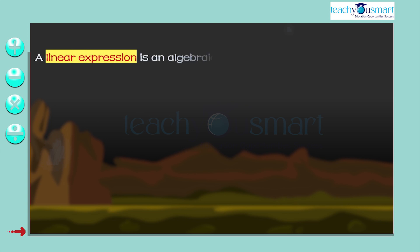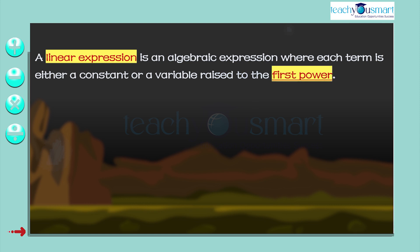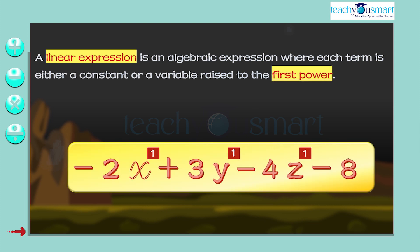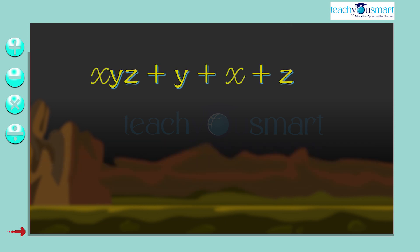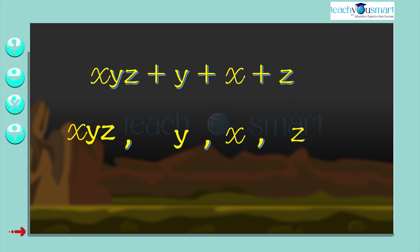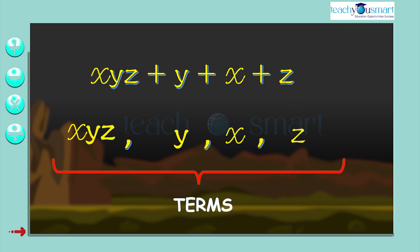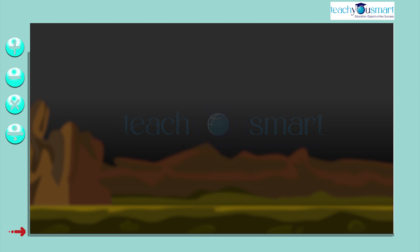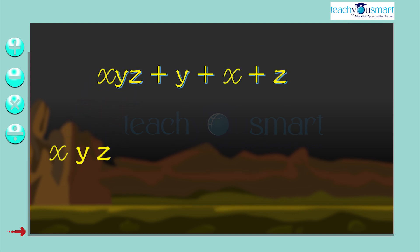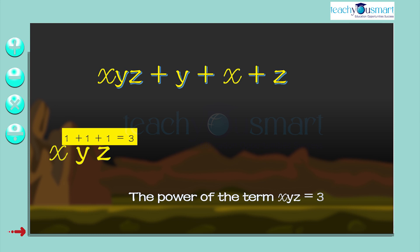We know that a linear expression is an algebraic expression where each term is either a constant or a variable raised to the first power. Consider the equation xyz plus y plus x plus z. We can calculate the power of each term. In the term xyz, the power is the sum of the power of each variable, therefore the power of the term xyz equals 3.